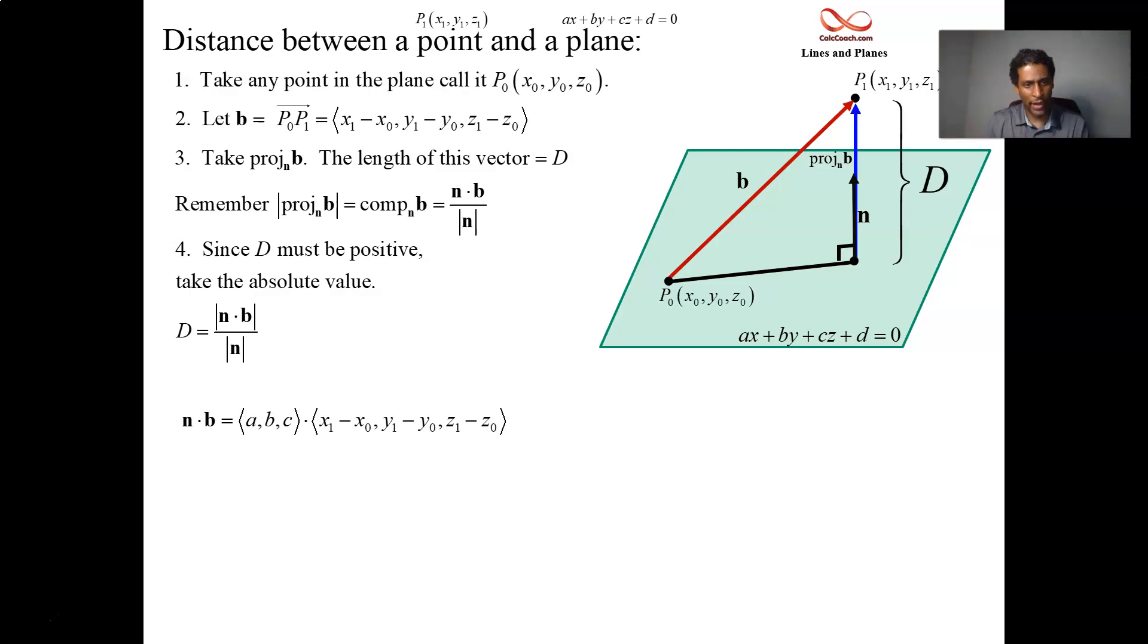So we get A times the quantity of X1 minus X0, B times the quantity of Y1 minus Y0, C times the quantity of Z1 minus Z0. That's our numerator. But let's dig deeper. What if we multiply it out? We have AX1, BY1, CZ1 and then minus AX0 minus BY0 minus CZ0. But that should look familiar from when we had our first slide on the equation of a plane. That parentheses is actually what we had called D.